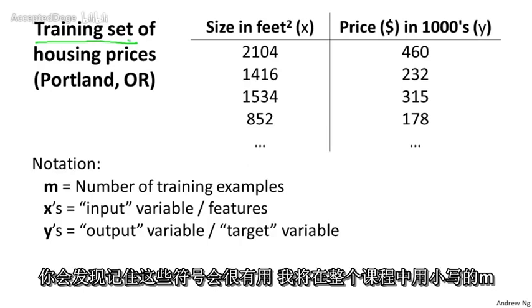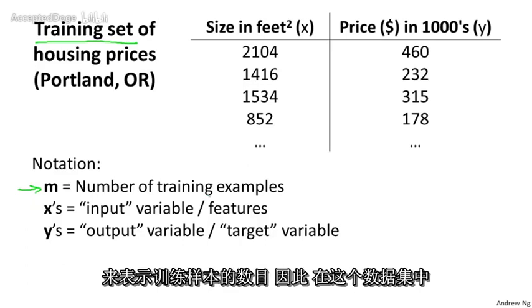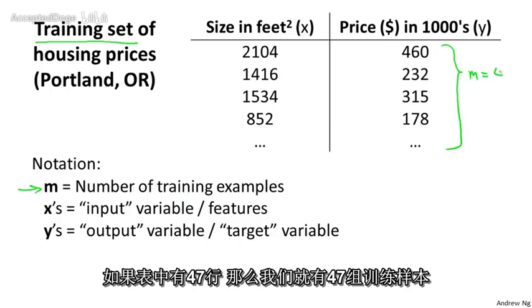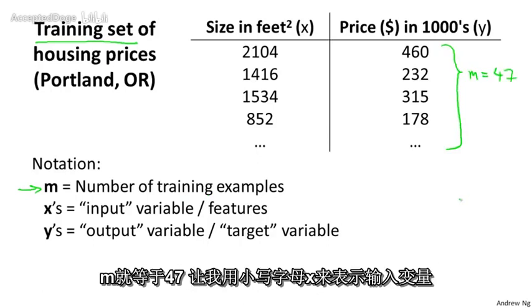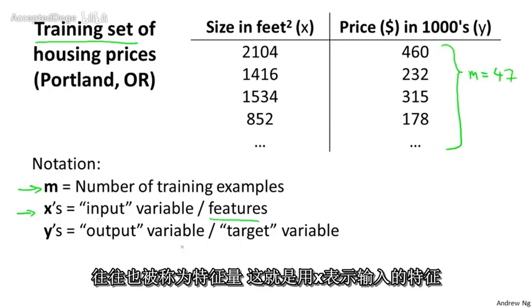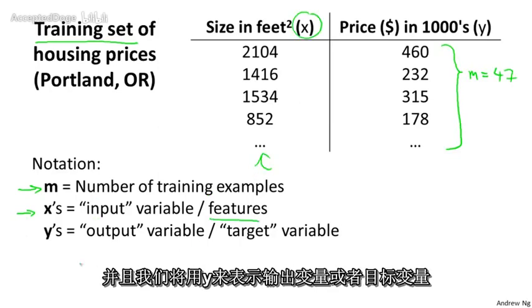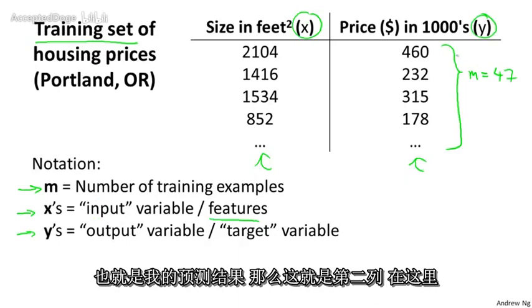I'm going to use lowercase m throughout this course to denote the number of training examples. So in this data set, if I have, say, 47 rows in this table, then I have 47 training examples and m equals 47. I'm going to use lowercase x to denote the input variables, often also called the features. And I'm going to use y to denote my output variable, or the target variable which I'm trying to predict — that's this second column here.